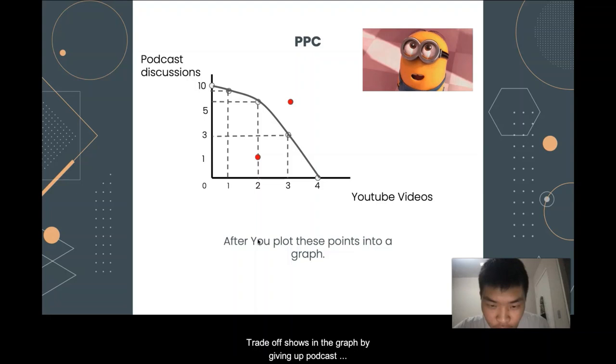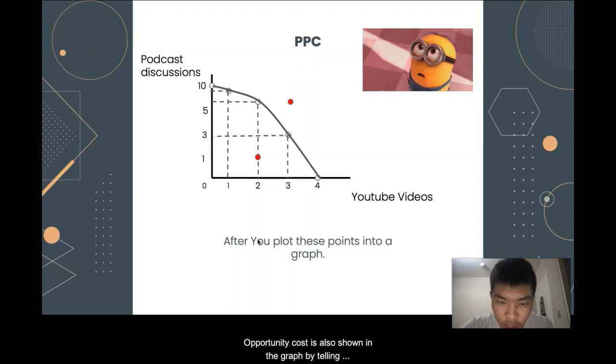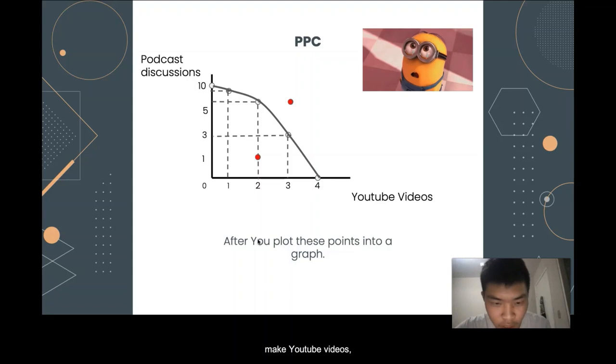Trade-off shows in the graph too, by giving up podcast discussion for each YouTube video is made. Opportunity cost is also shown in the graph by telling specific discussion this group have to give up to be able to make YouTube videos. When producing more videos, less discussion are produced. And the number of discussion that is lost in the opportunity is the opportunity cost.